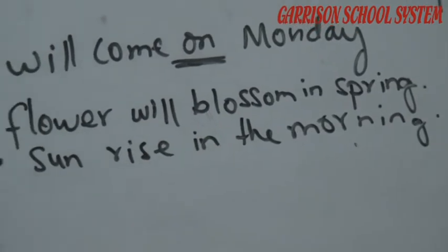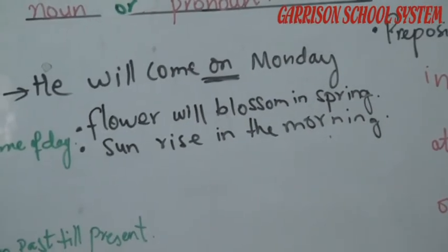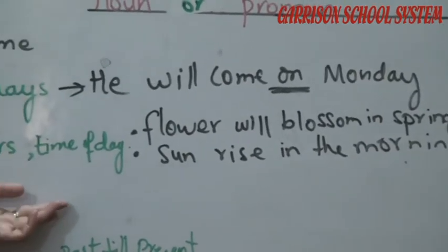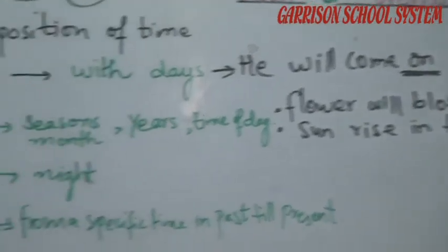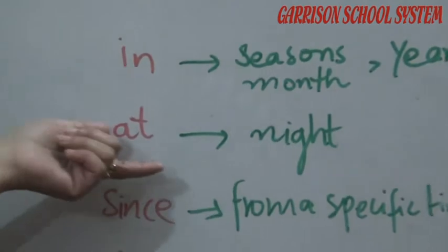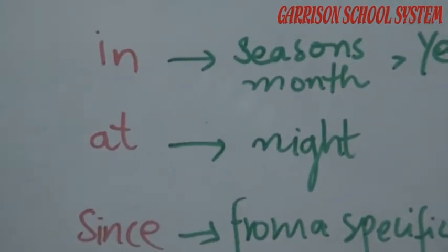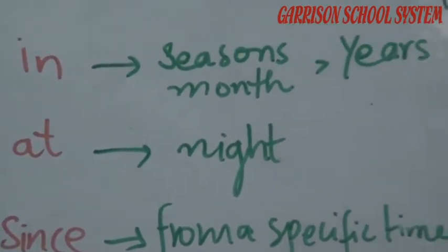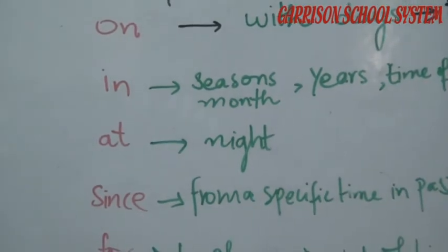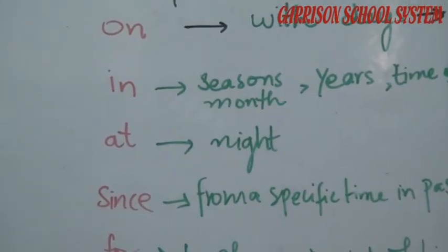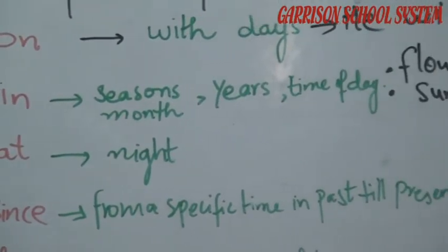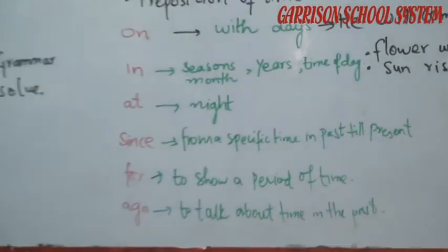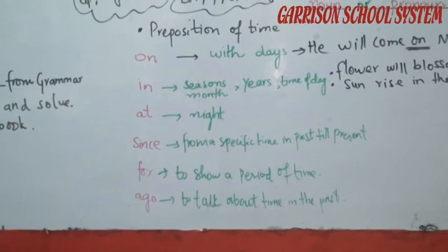For time of the day, note that we do not use 'in night' — we do not say 'He will come in night.' For night, we use 'at.' So we say: 'I go out to play with my friends in the evening' — here we use 'in.' But for night: 'I will have my dinner at night.'